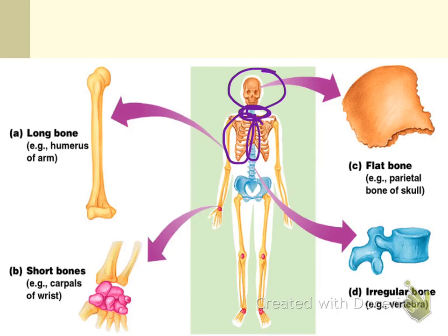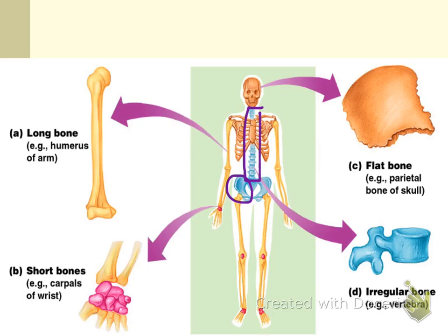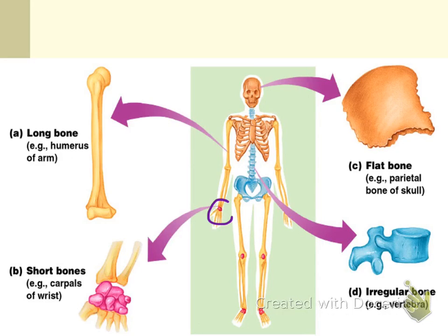All bones in the flat bone category are in orange. The irregular bones are in blue, which are all the bones that make up the spine and vertebrae, the coxal hip bones, and the sacrum at the small of the back. The short bones are all in pink — the carpal wrist bones, the patella, and the tarsal ankle bones.